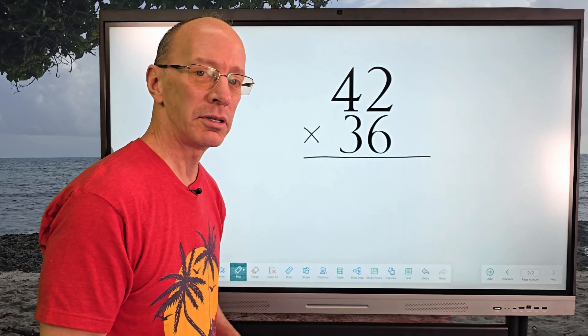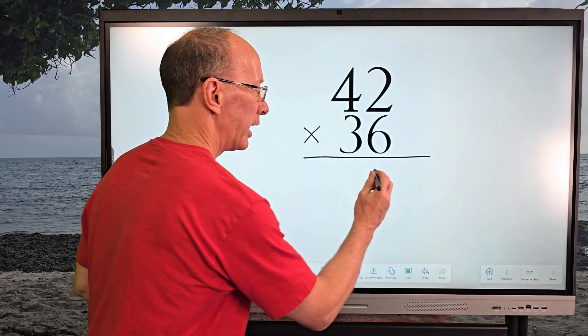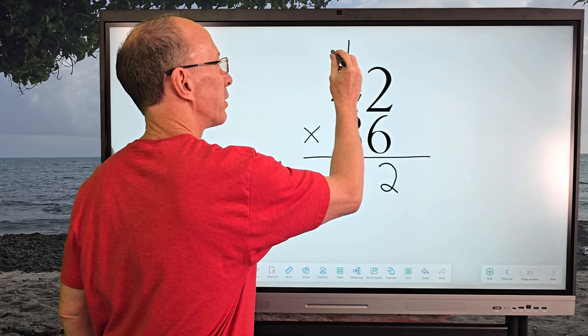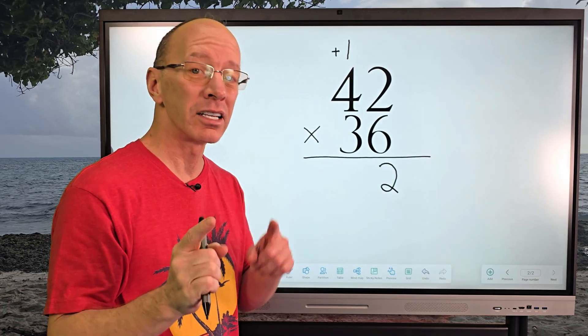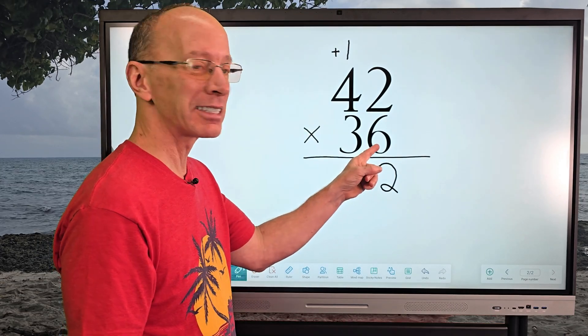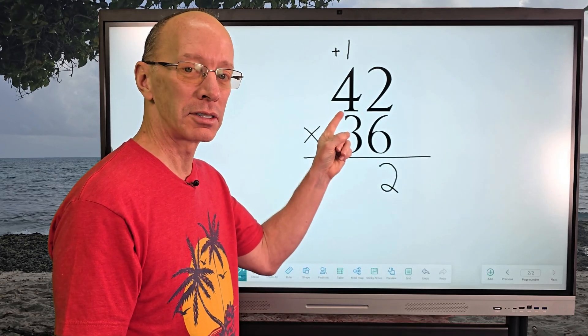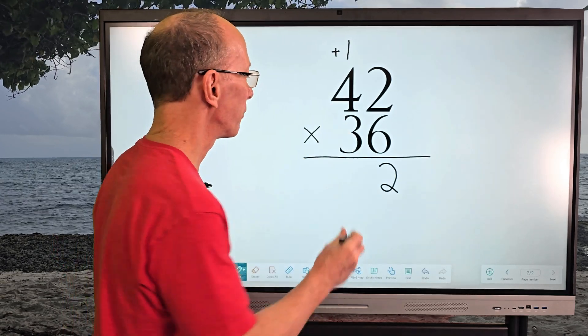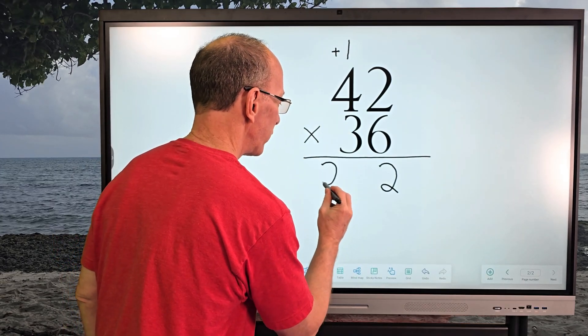Six times two equals 12. And I write the two right here and I'll carry the one and I'll put it right up here. And I'm going to add that one in a little bit. Not yet, in a little bit. So now I'm going to take six times four. Six times four equals 24 plus the one would be 25. So let's go ahead and put 25 right here.